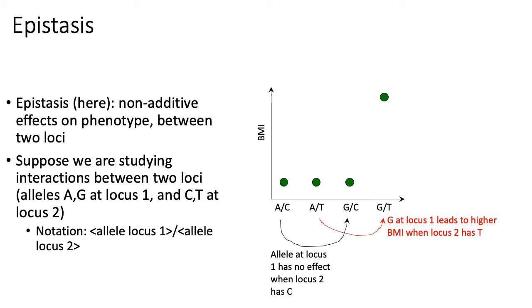Epistasis is pretty common as well. The idea of epistasis is that the effect of an allele in one locus depends on the effect of an allele found in a different locus.